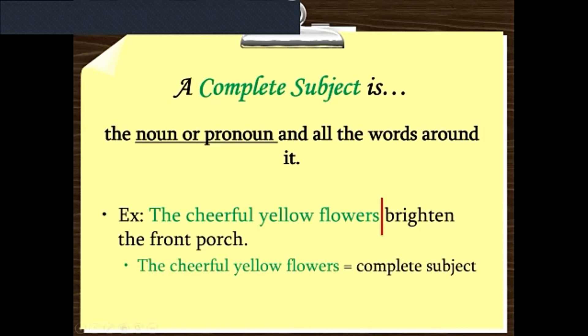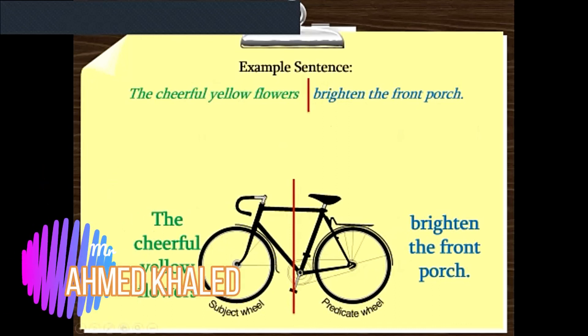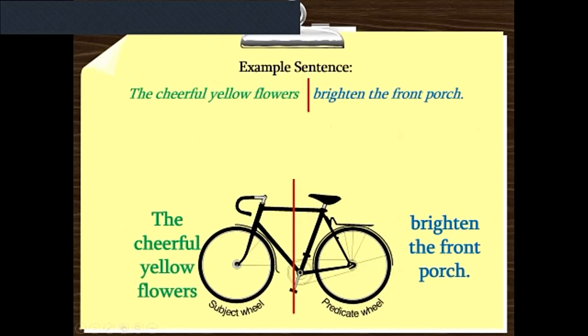This is the complete subject, but the main subject is only 'flowers.' And the main predicate is 'brighten.' So the cheerful yellow flowers is the complete subject. As you can see, here are the two wheels. The cheerful yellow flowers is the subject or the first wheel, and brighten the front porch is the second wheel. Both of them together form a sentence.